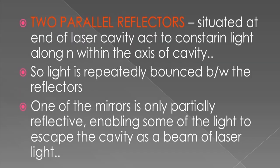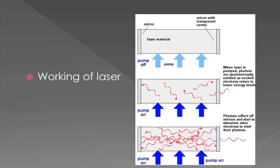Two parallel reflectors situated at the ends of the laser cavity constrain light along the axis of the cavity, so light is repeatedly bounced back and forth. One of the mirrors is only partially reflective, enabling some of the light to escape the cavity as a beam of laser light.